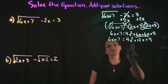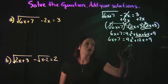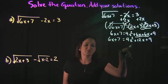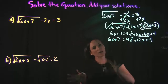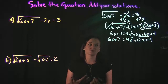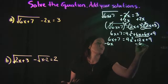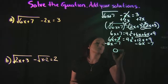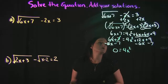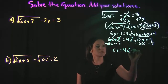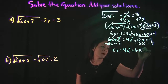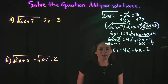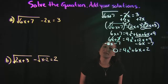We're left with a quadratic equation here. When dealing with quadratics, you want to get everything moved over to one side set equal to zero. So I'm going to subtract 6x and subtract 7 from both sides, giving us 4x² plus 6x plus 2 equals 0.